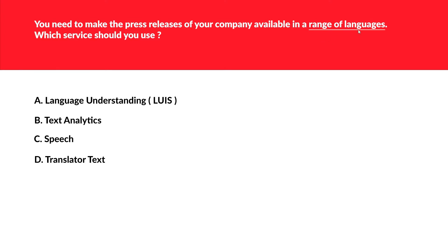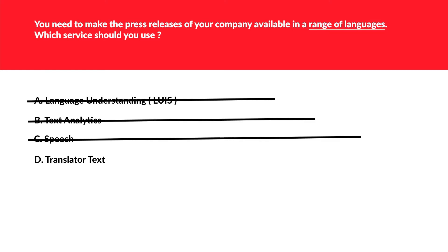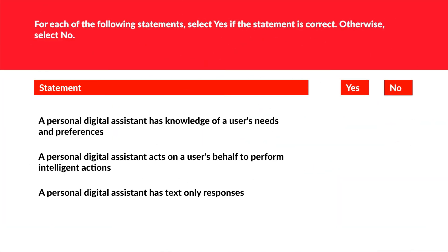This question is related to press releases. Among the keywords it mentions 'range of languages.' Understand the question: when you want a press release in multiple languages, you are trying to translate from one language into multiple languages. So you need to choose the option that does this. All other options are distractors — only option D, 'translated text,' fits. This is a no-brainer and is the correct option.